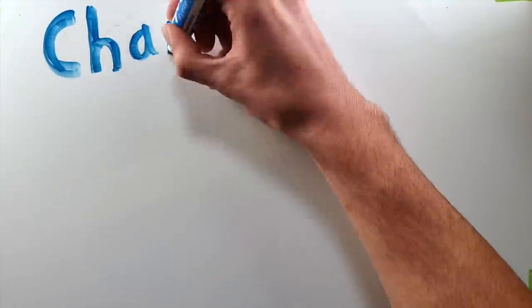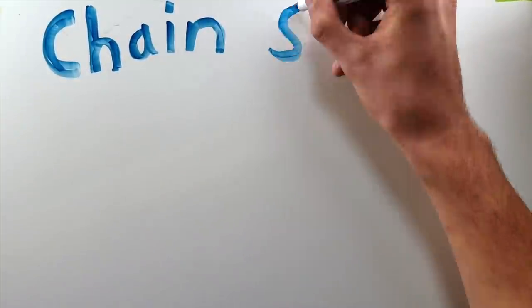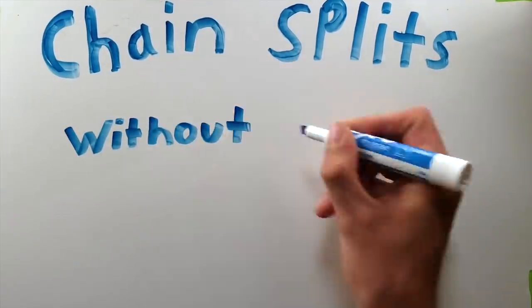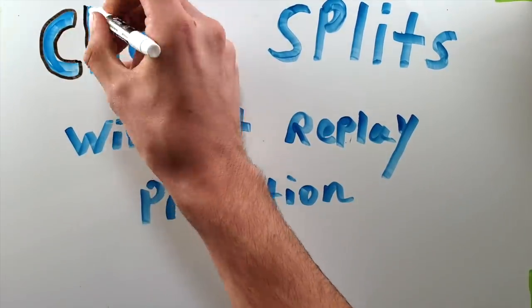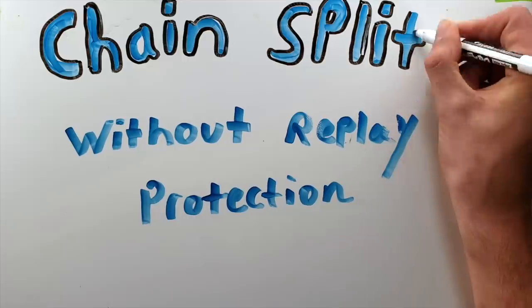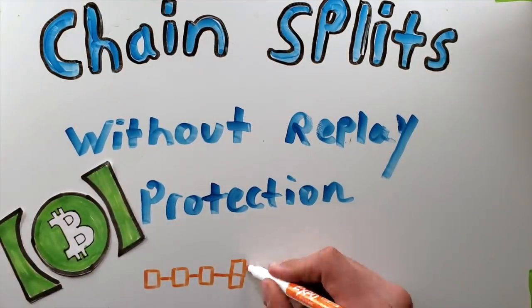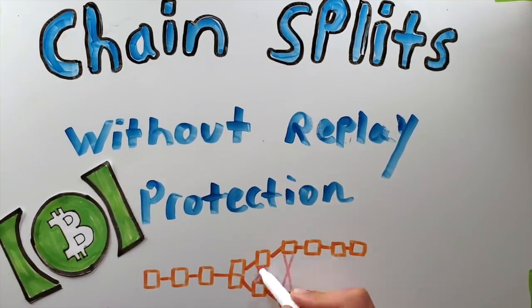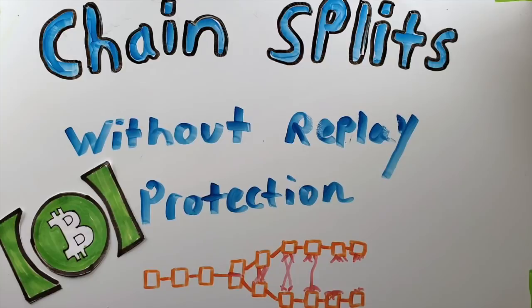If you're watching this, you're probably aware that Bitcoin Cash is having another hard fork upgrade this November. But this one's a lot different than the others we've seen in the past. There are a lot of things that are happening that we've never seen before. Between the two chains, there isn't any replay protection by default. So that's the purpose of today's video, to help everyone understand what happens to a persistent chain split whenever no replay protection is added by default.